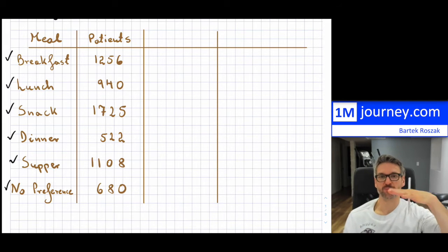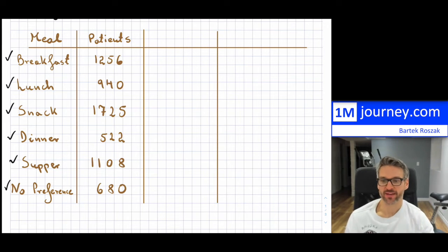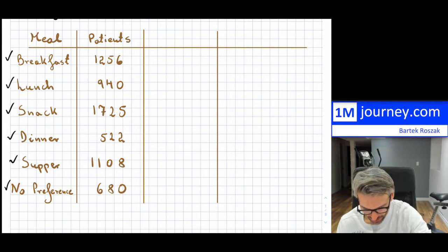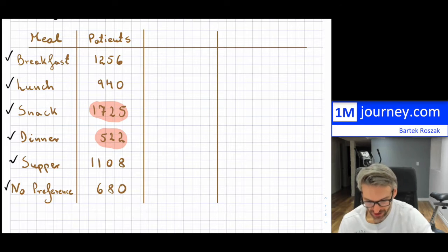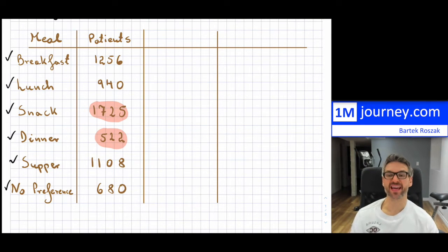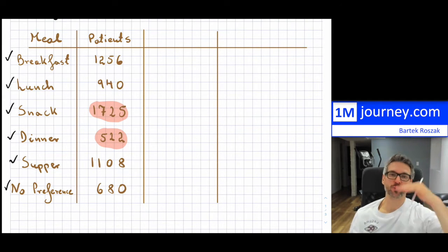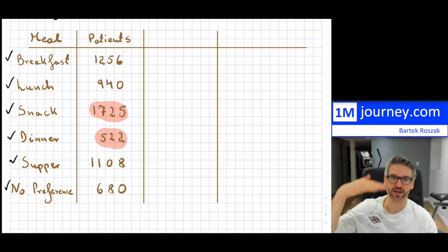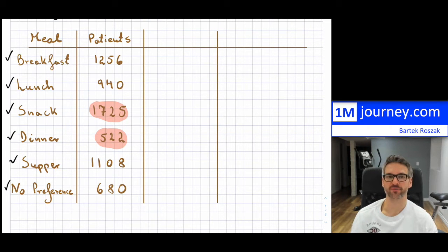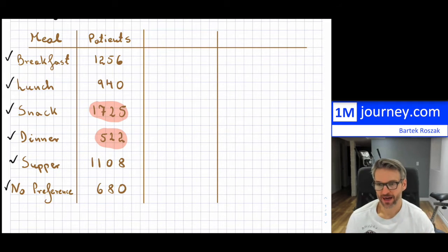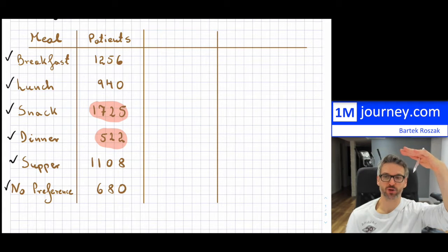For the y-axis, look at your smallest result, which is 522, and your largest, which is 1,725. It would make sense to scale it to somewhere above 1,700 — either 1,800 or maybe 2,000. How are you going to scale it — by 100s, 200s, 300s? That's honestly up to you and how you want to visually show the bar graph to someone else.